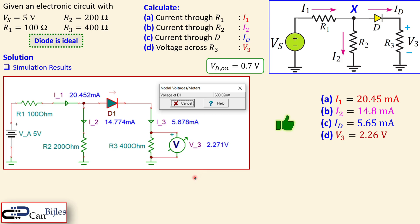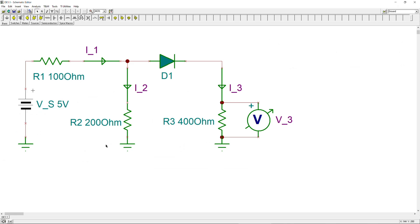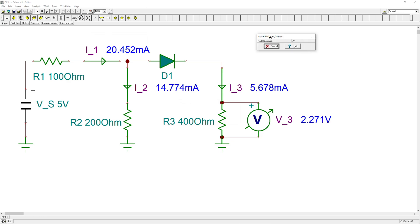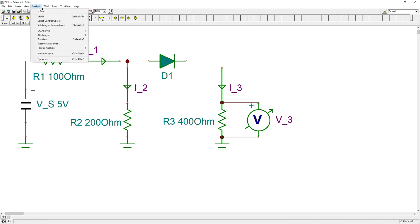Now let's jump to the live SPICE simulator. The circuit is already prepared with VS, the resistors, current arrows to measure each branch, and a voltage meter across R3. Running DC analysis — 'calculate node voltages' — produces all the measurement values shown in blue, which confirm what was shown in the slide presentation.